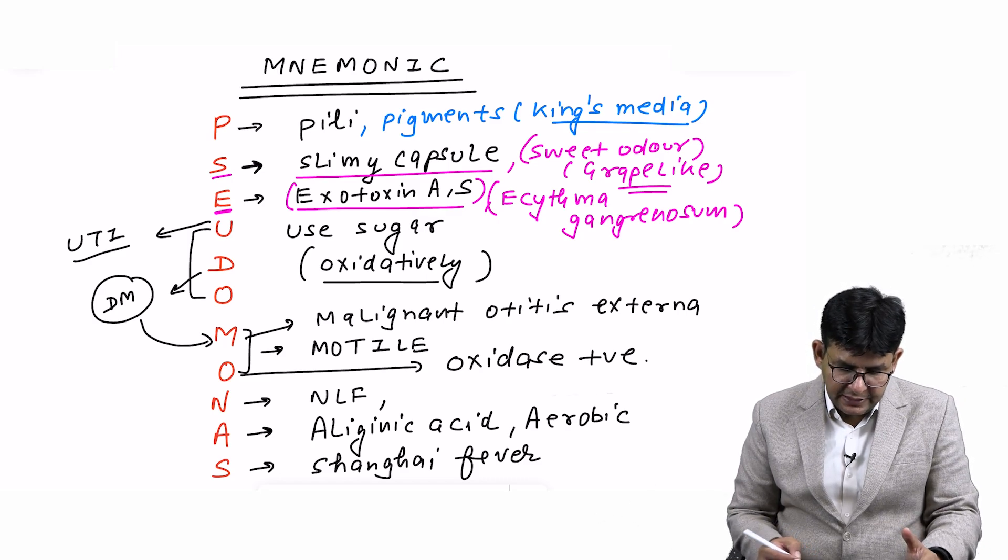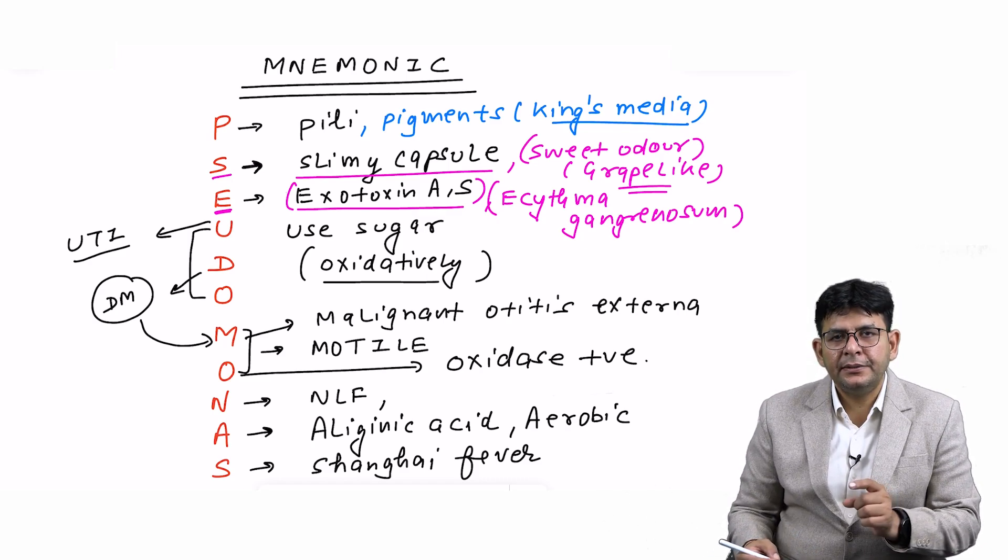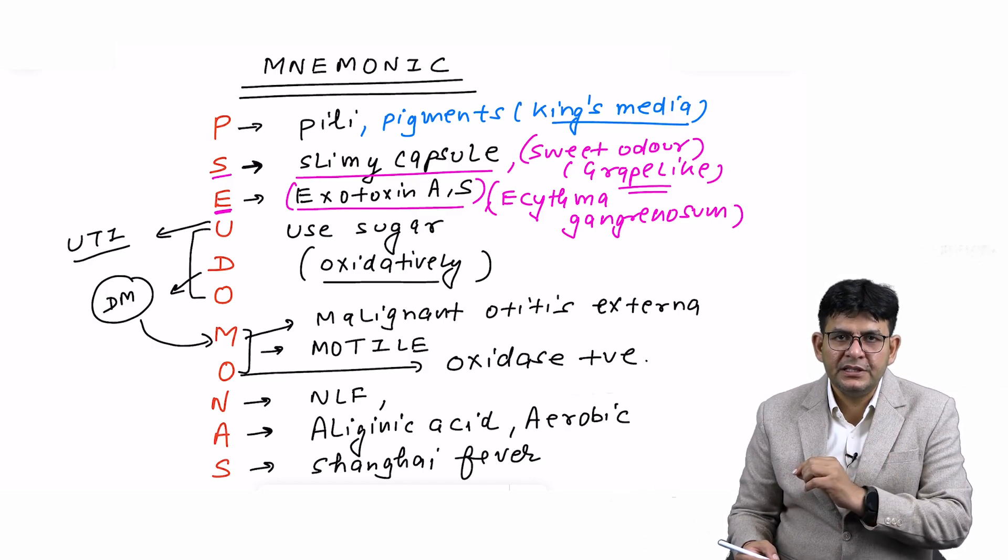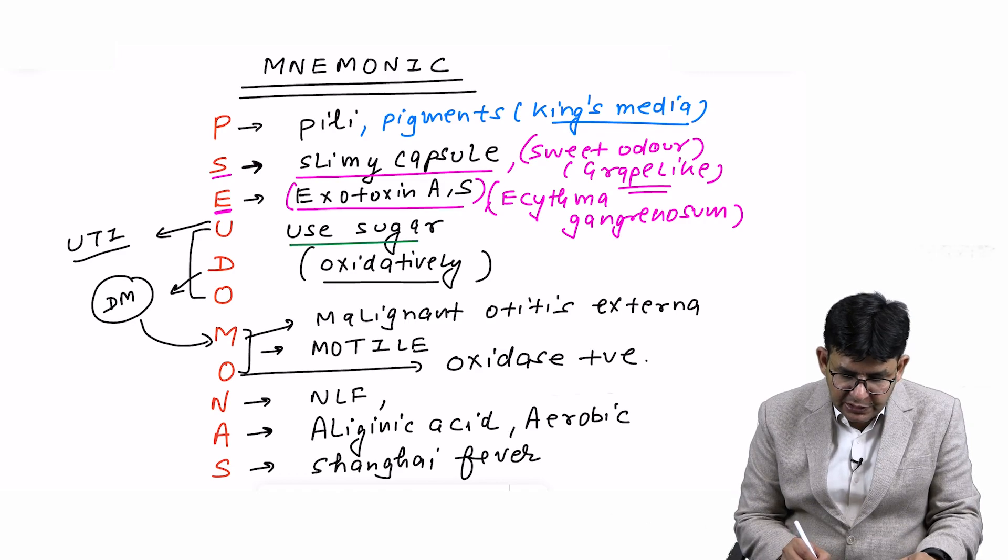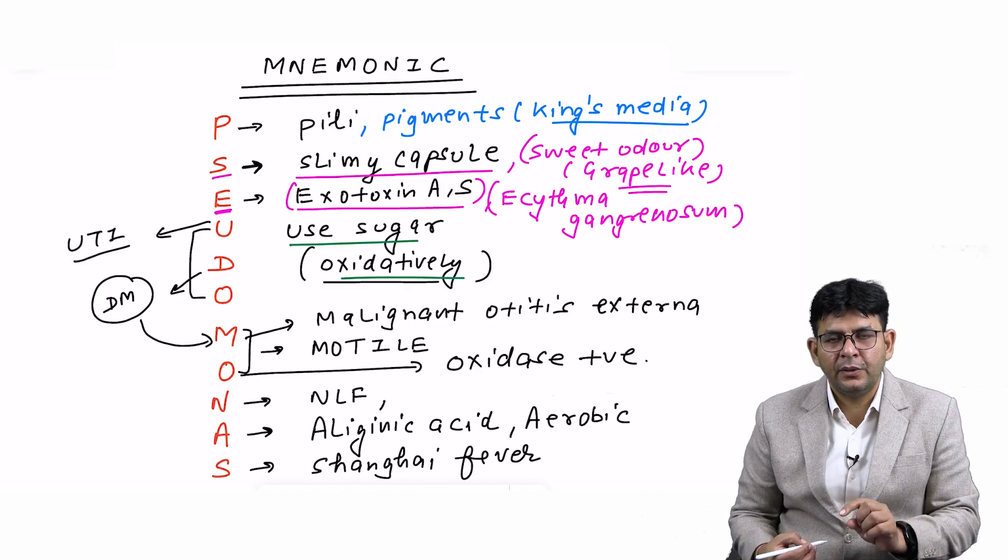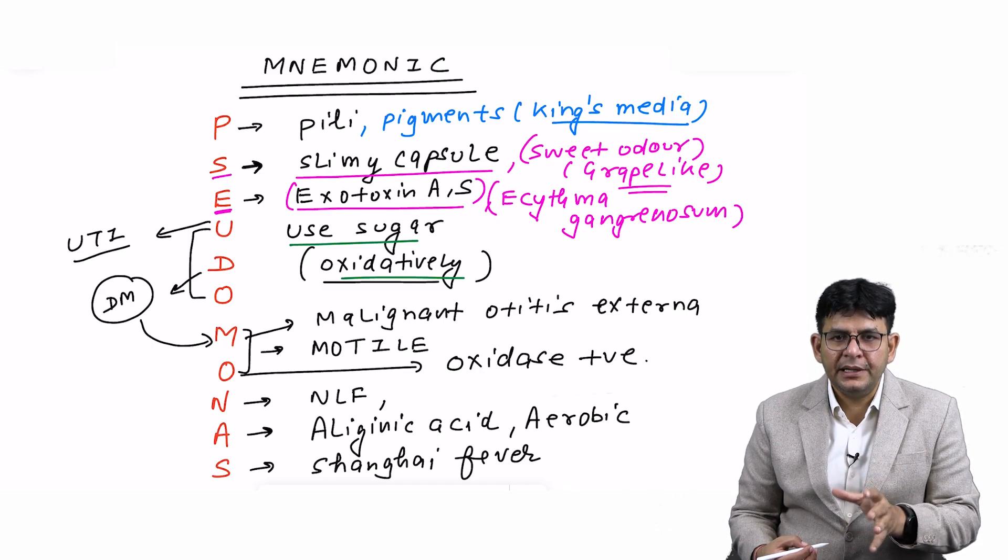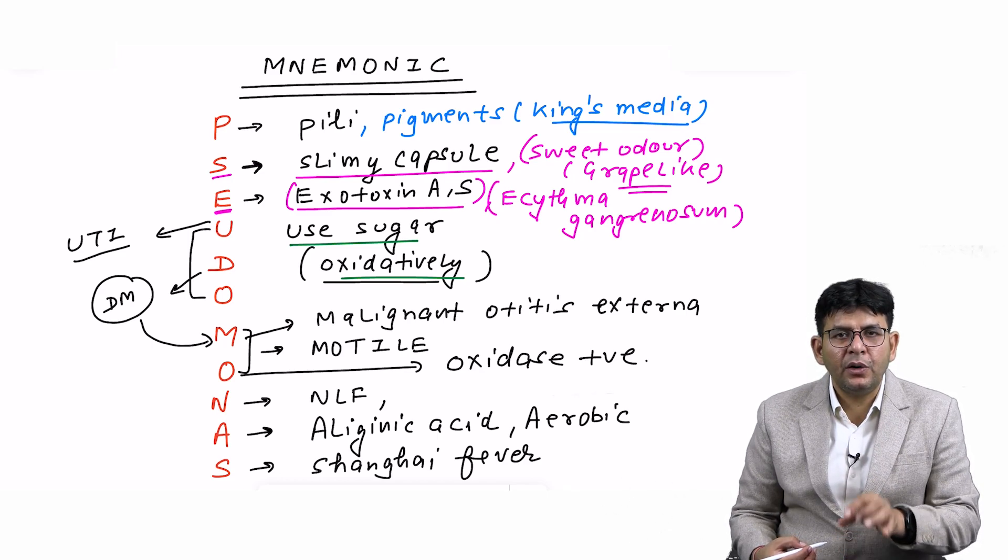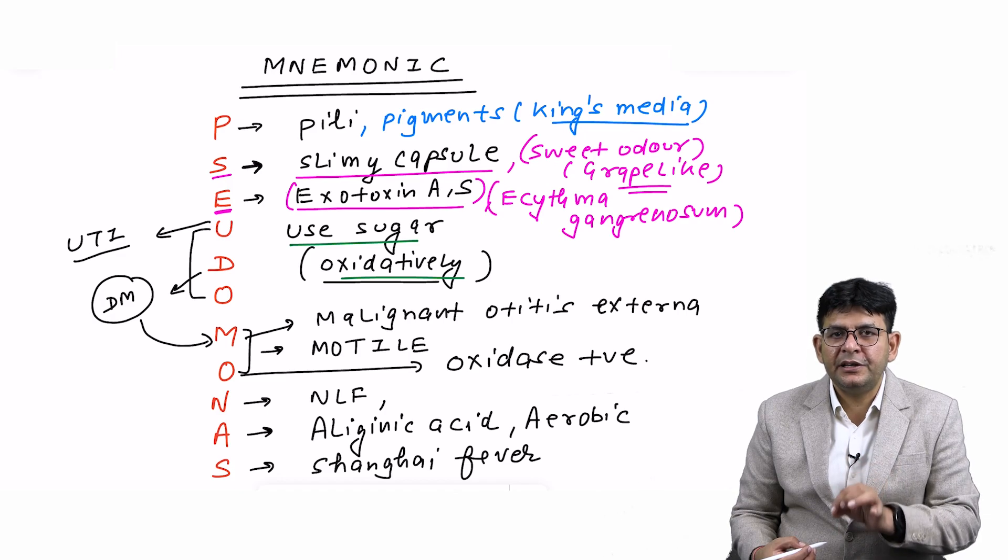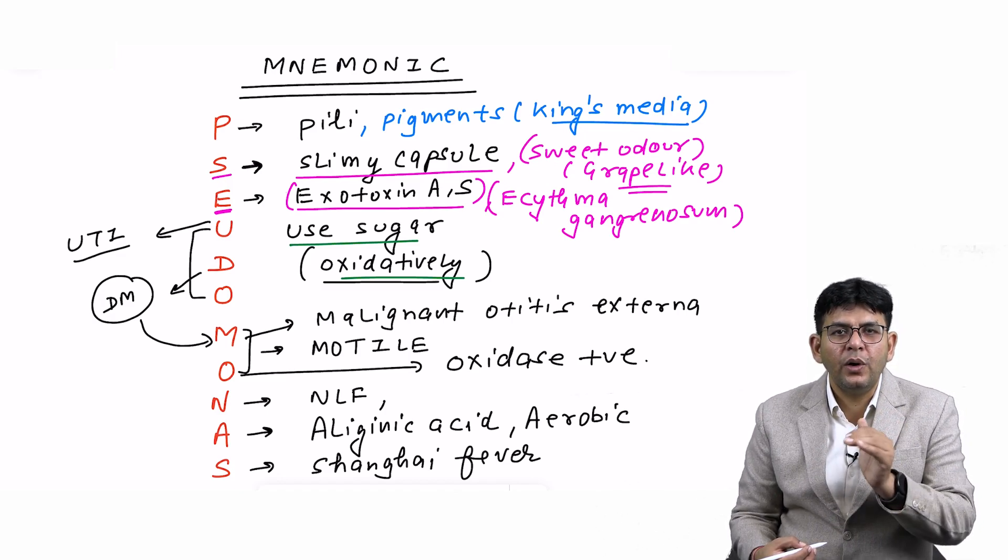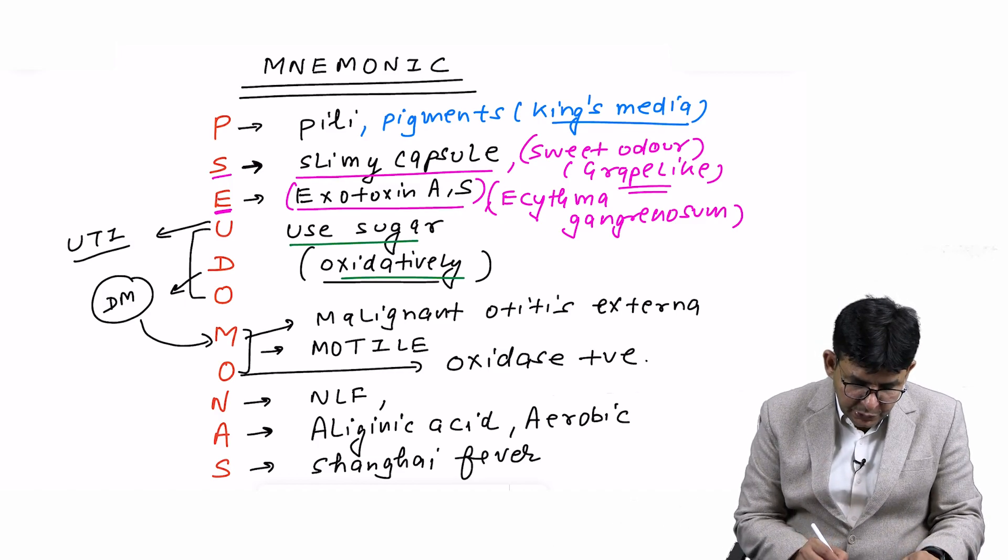Another important aspect: U represents the oxidative-fermentative test, also termed as Hugh-Leifson test. They use the sugar oxidatively only because they are non-fermenters, and these non-fermenters ferment the sugar only by oxidative method in the Hugh-Leifson test, also termed as OF test.